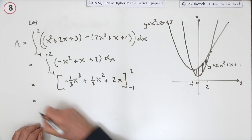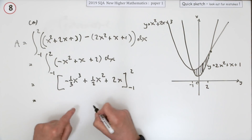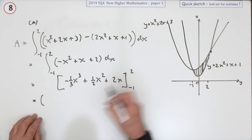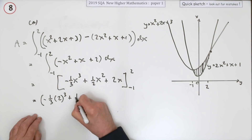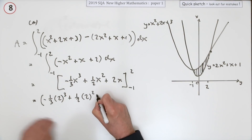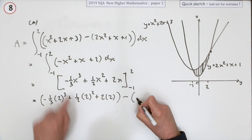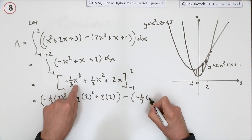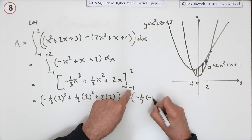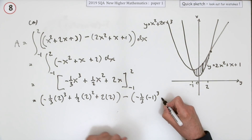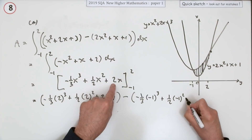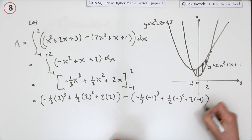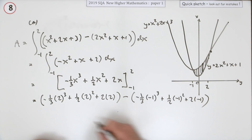That's to be evaluated — now just put the numbers in and do the arithmetic. At x equals 2: negative a third of 2 cubed, plus a half of 2 squared, plus 2 times 2. Then minus the result at x equals negative 1: negative a third of negative 1 cubed, plus a half of negative 1 squared, plus 2 times negative 1. That's probably the third mark of the whole question.